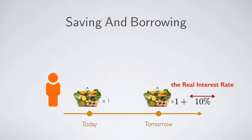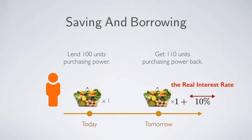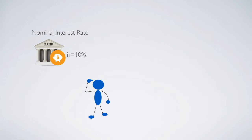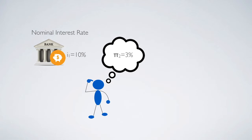Suppose the real interest rate is 10%. This means that for a household willing to sacrifice 100 units of purchasing power, he will be able to get 110 units back. If a person goes to a bank and sees the saving interest rate is 10%, this is the nominal interest rate. He then thinks about what the inflation rate will be tomorrow. If it is 3%, then his saving behavior gives him a real interest rate R1 equal to only 7%, meaning for every basket saved, he gets an extra 0.07 unit of purchasing power back.